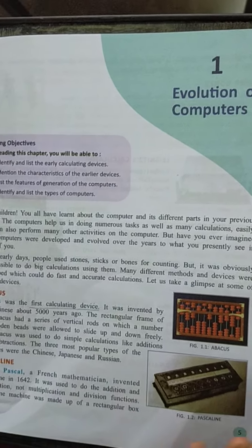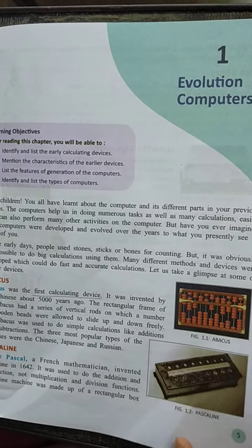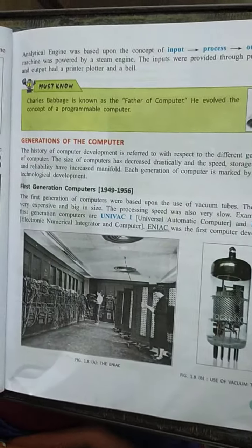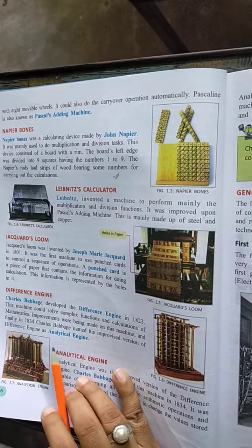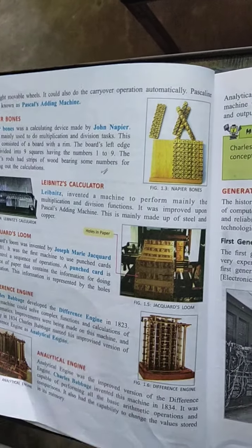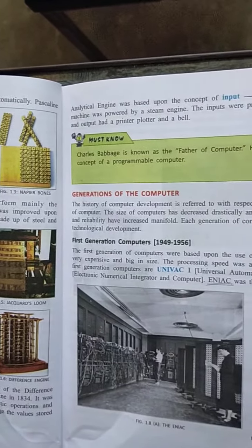Do you remember students? In the previous class we already discussed about Abacus, Pascaline, Napier Bones, Lisbon Calculator, Jackward Loom, Difference Engine, Analytical Engine, and the Generation of the Computer.